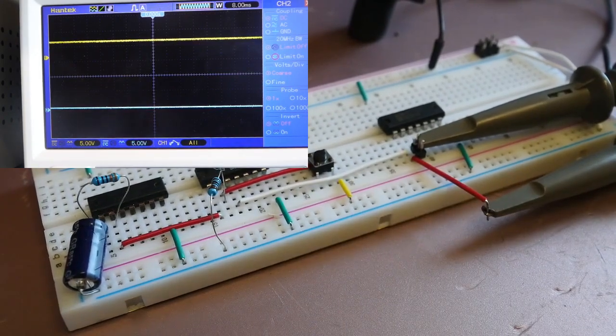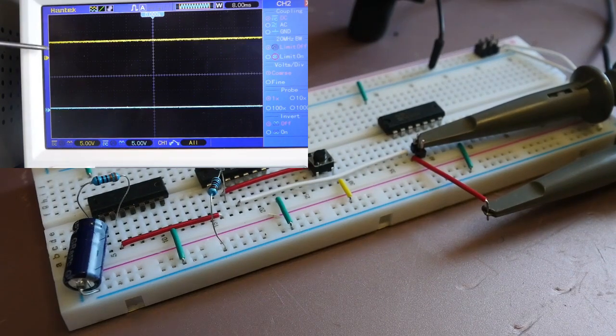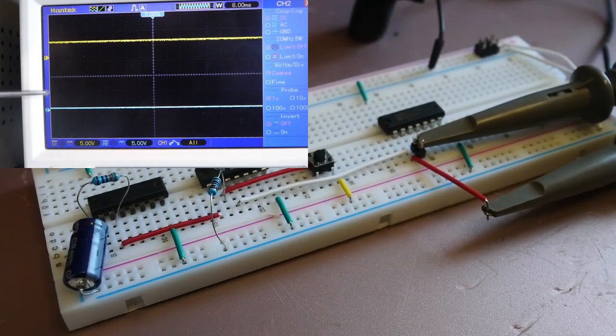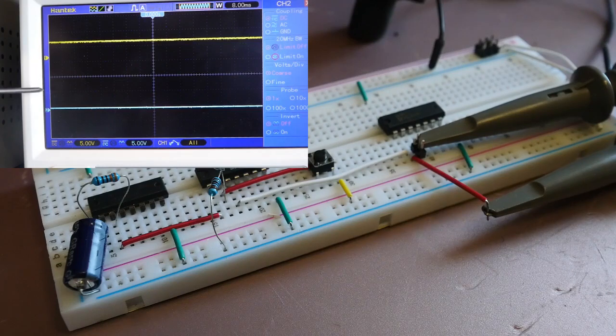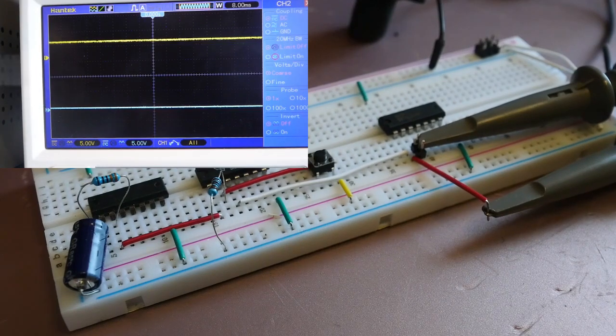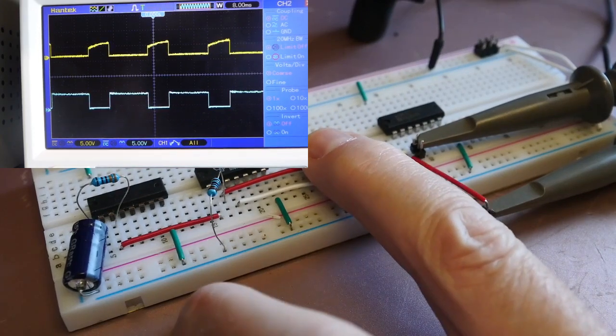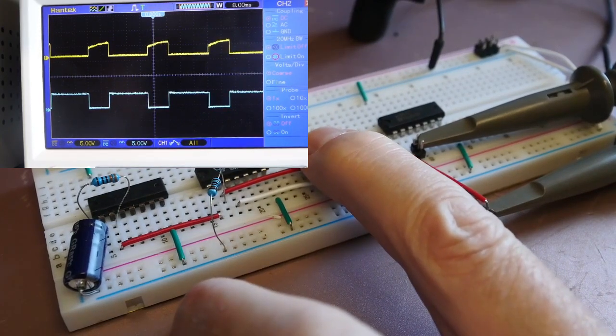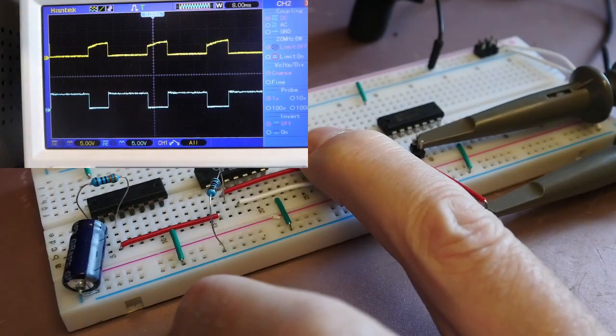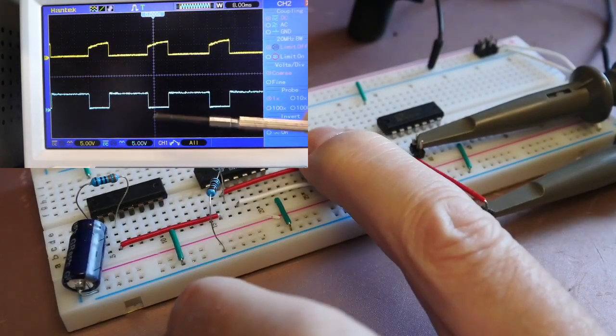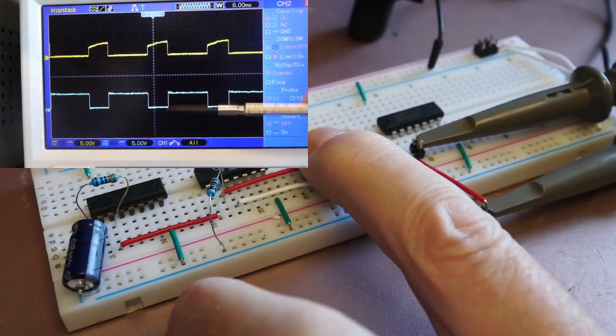So you may recall we've got that waveform we wanted to invert. Currently, we've got the output is high from the NAND gate on channel one, and therefore the output from the inverter is low. So that's correct.